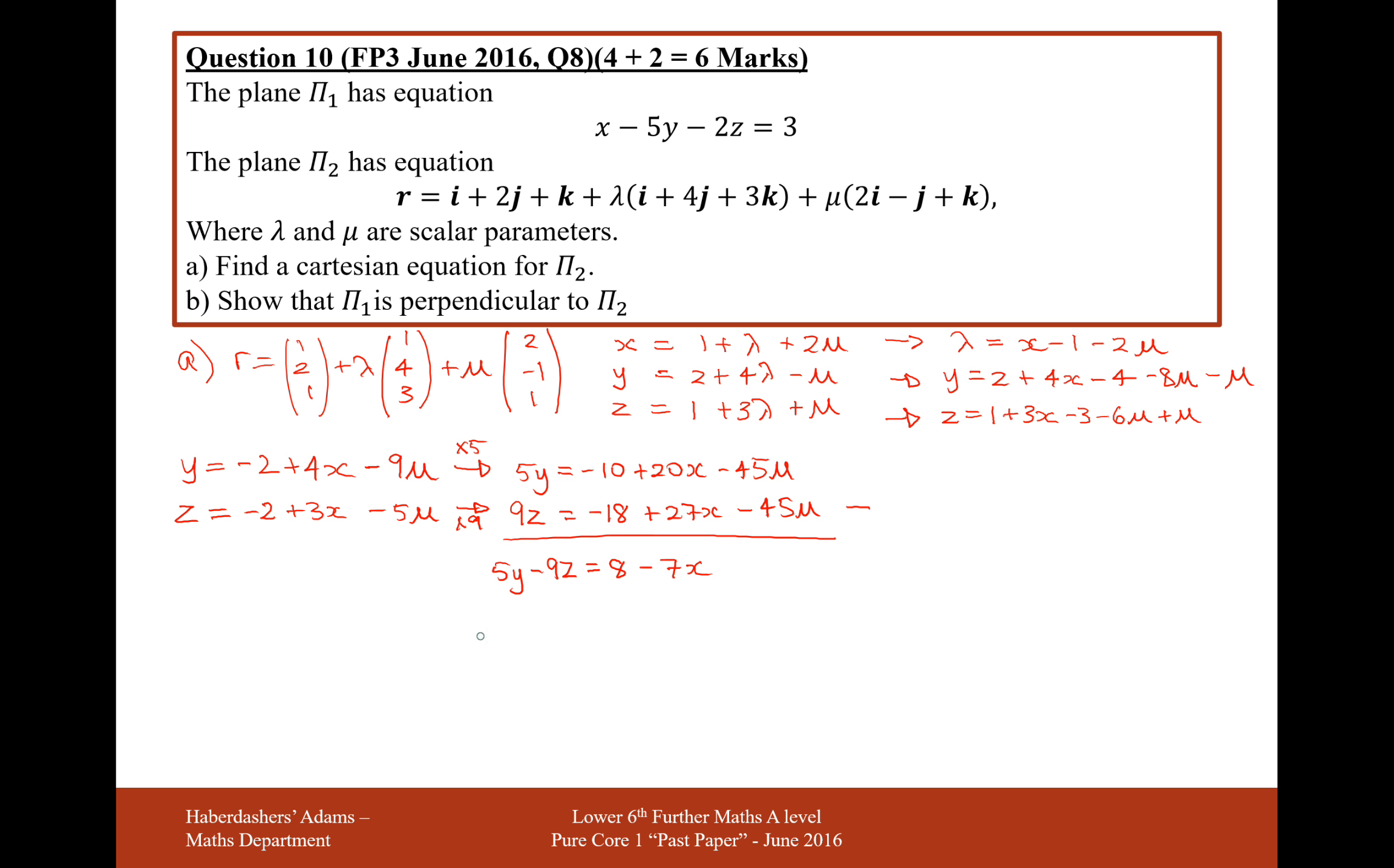So we're nearly there. All we need to do is add 7x onto the other side, and we're going to get 7x plus 5y minus 9z equals 8. That's the final answer for part A. This is the Cartesian equation for π2.